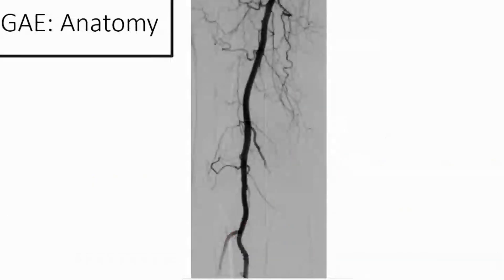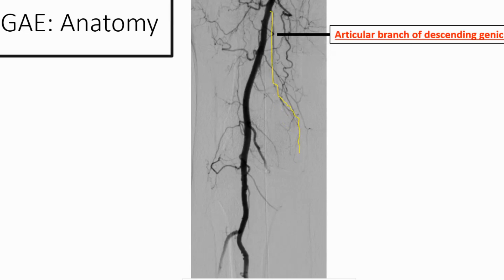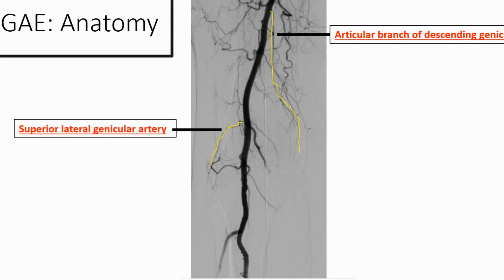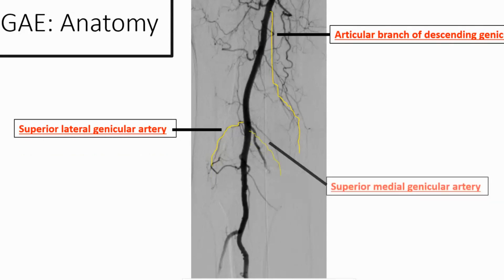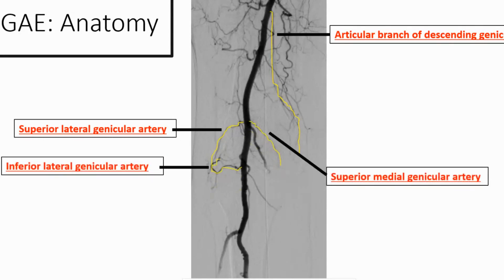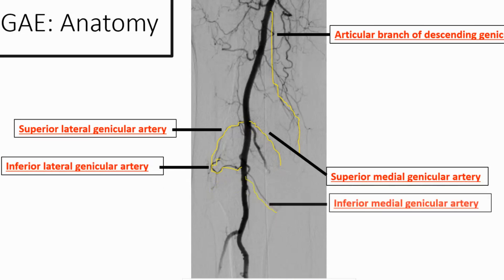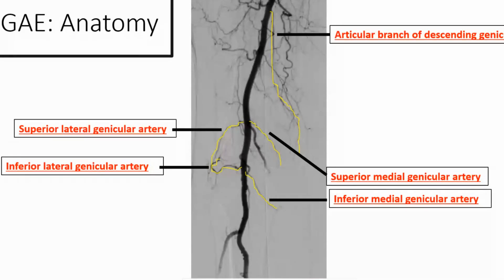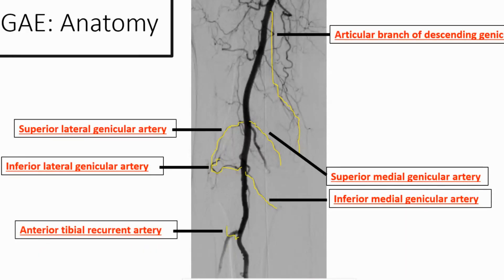Looking at what this appears like on an angiogram — this is actually the first GAE I ever did — when I performed this angiogram I had to take a step back because it can be very overwhelming. But if you look closely, the arteries start jumping out at you. You can see the articular branch of the descending genicular coming down with a parallel course to the cortex of the distal femur, wrapping around the condyle. Then there's that butterfly or bat-wing appearance of the superior lateral and superior medial genicular arteries, the horizontal course of the inferior lateral genicular, the 45-degree angle of the inferior medial genicular, and a tiny anterior tibial recurrent artery as well.